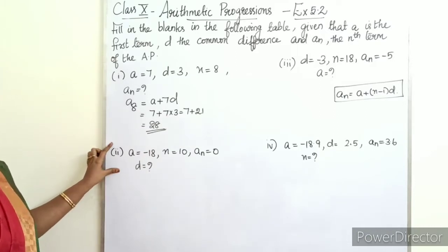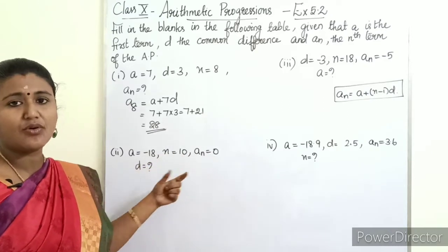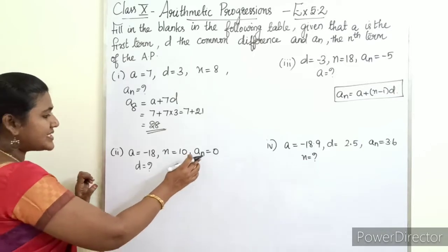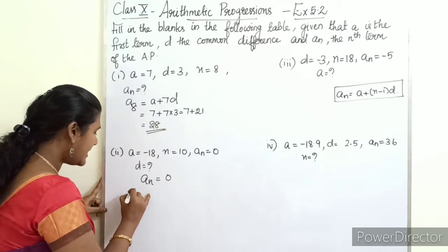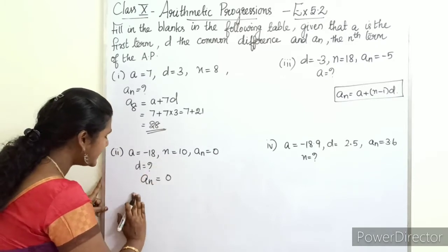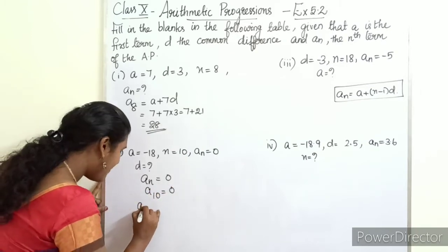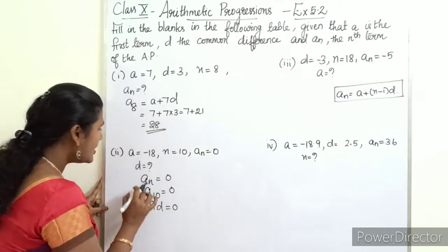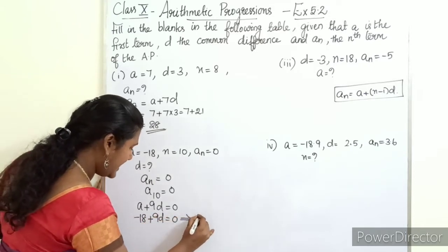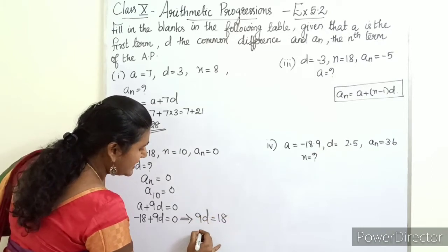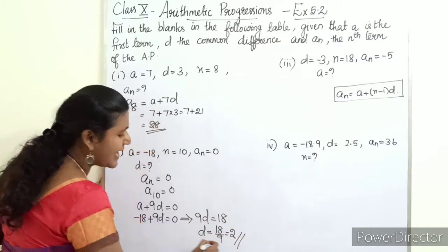Sub-question 2: a = −18, n = 10, a_n = 0; find d. Since a_n = 0 and n = 10, we write a_10 = 0, so a + 9d = 0. Substituting a = −18: −18 + 9d = 0, which gives 9d = 18, therefore d = 2.